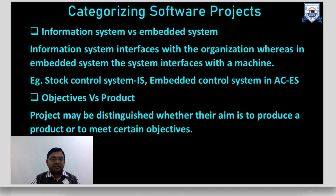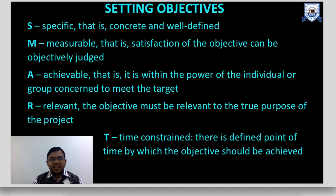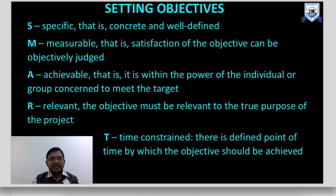A project may also be distinguished by whether its aim is to produce a product or to meet certain objectives. Setting objectives is an important part — your objective should be SMART: Specific (concrete and qualified), Measurable (satisfaction of the objective can be objectively judged), Achievable (within the power of the individual or group to meet the target), Relevant (relevant to the true purpose of the project), and Time-constrained (must be completed within a specific timeline).